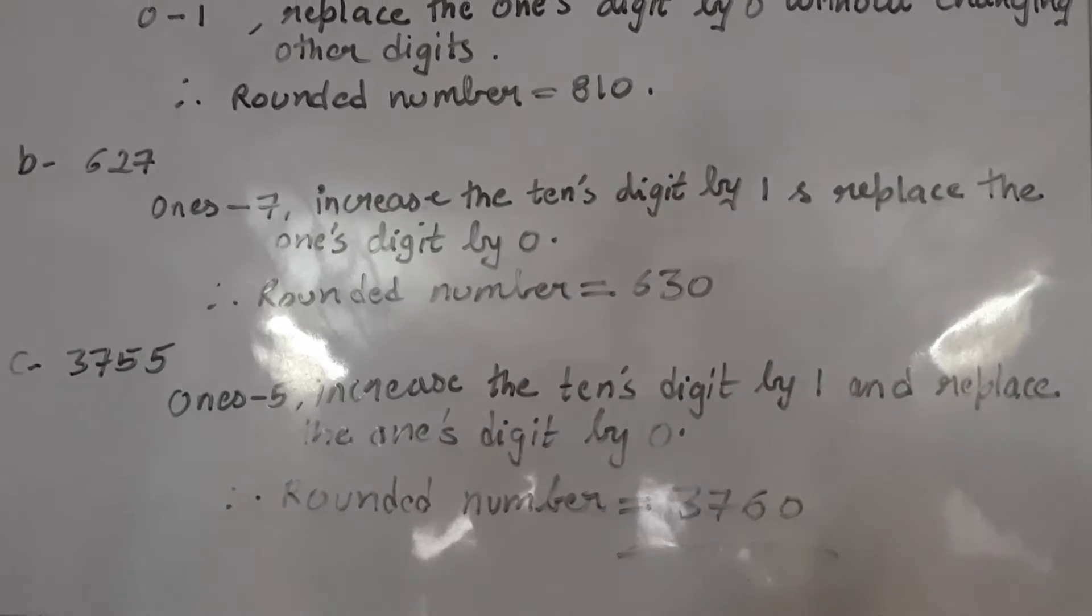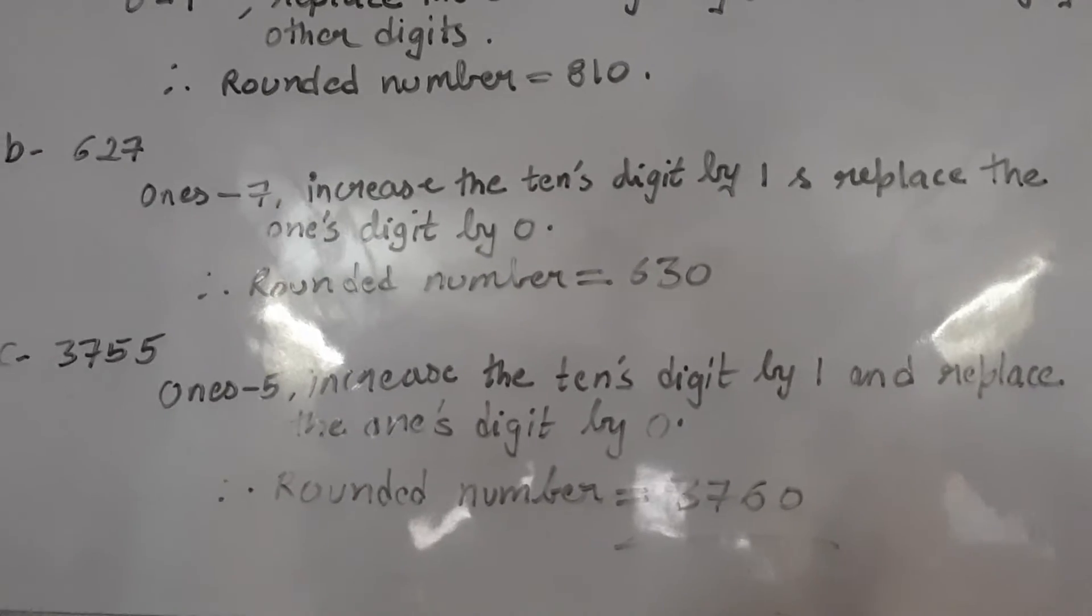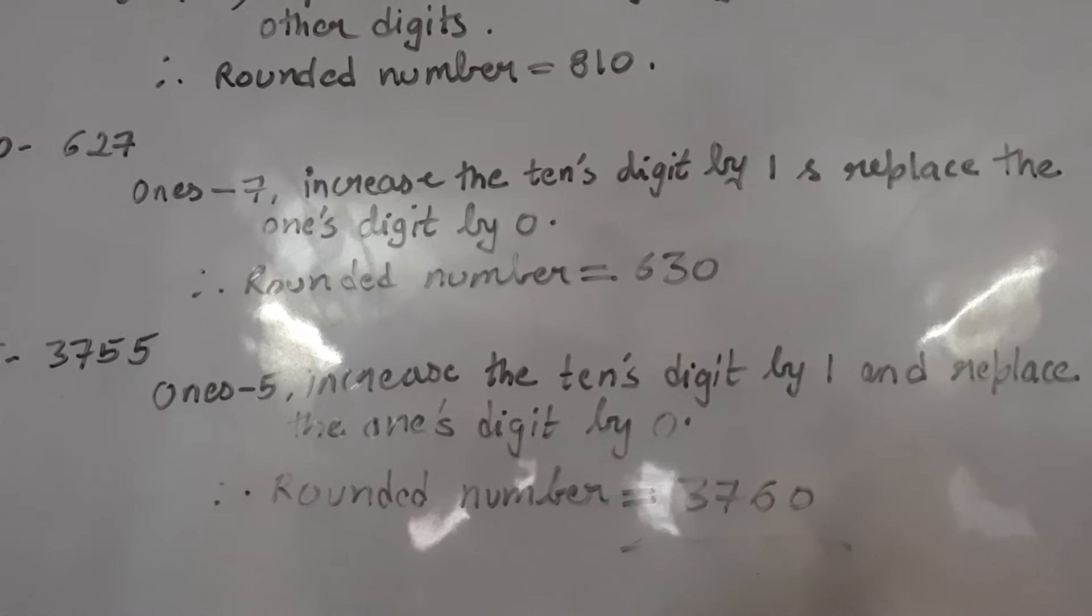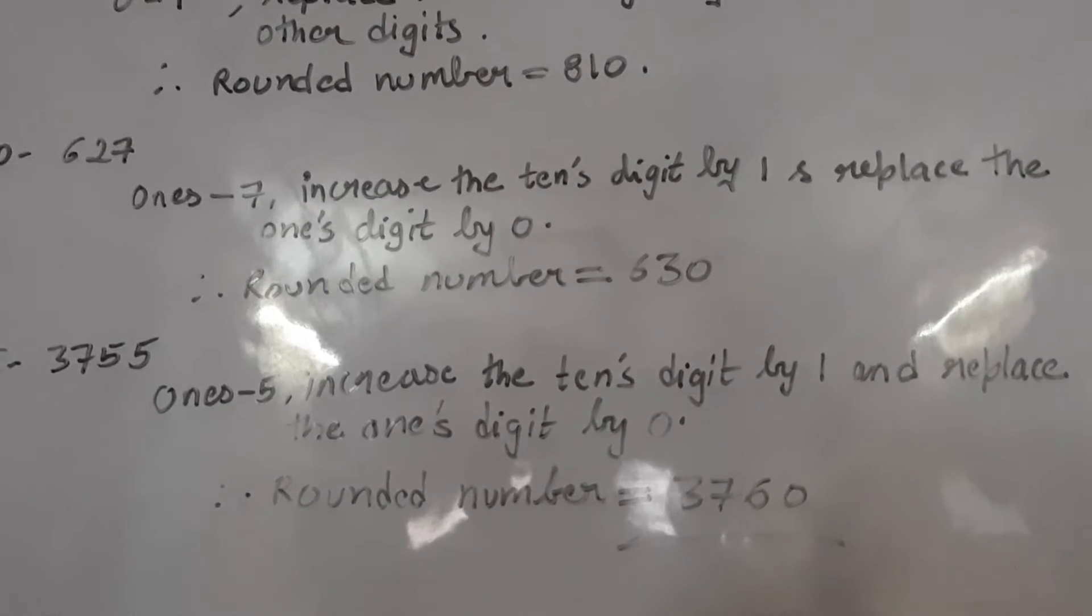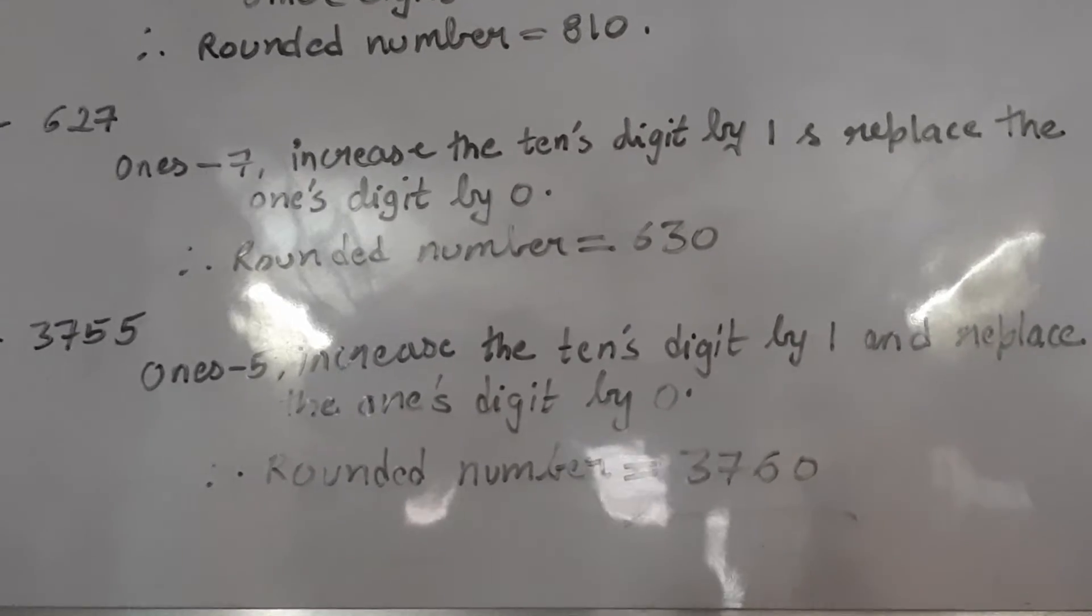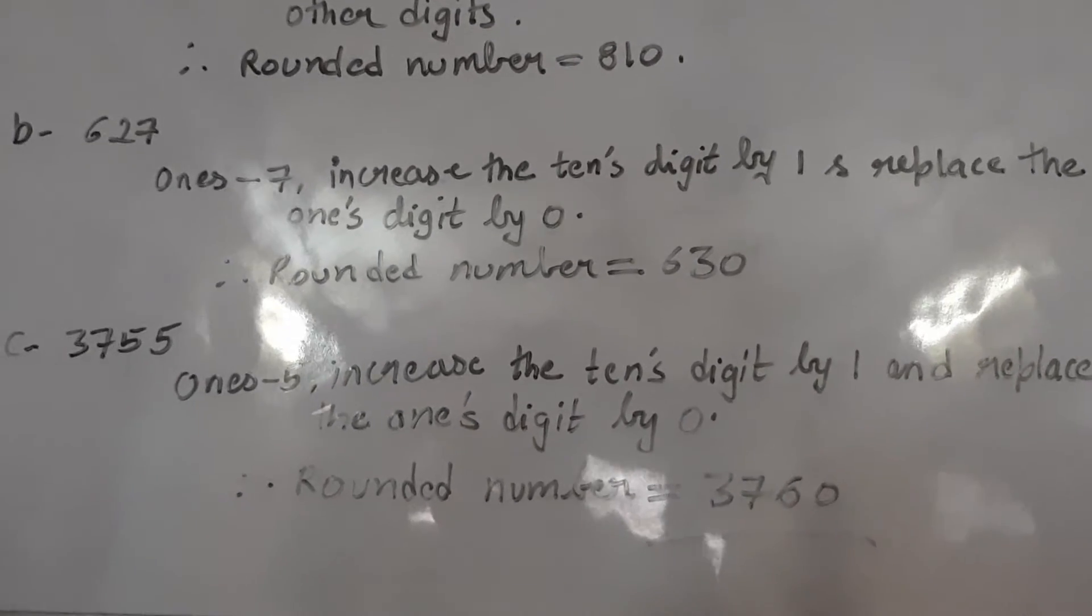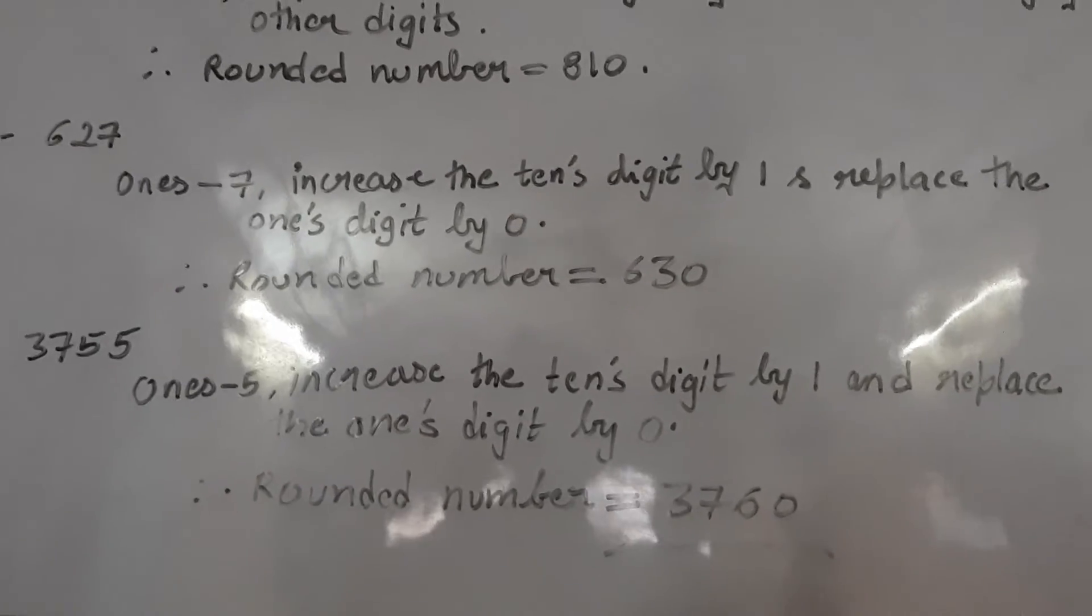And last example says 3755. So always check the 1's place. So at 1's place 5 is coming. And as per the rule, if the number is 5, always increase the 10's digit by 1 and replace 1's digit by 0. So you will add 1 at the 10's place. And at 1's place you will write the 0.